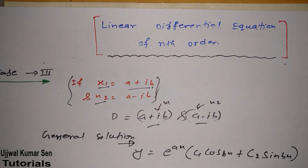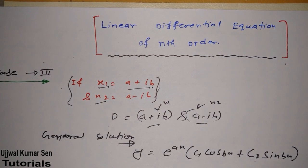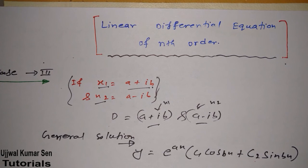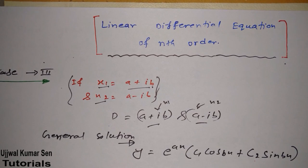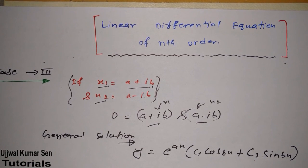So what we covered in this tutorial: linear differential equation of nth order, Case 3. If we consider x1 equal to a plus ib and x2 equal to a minus ib — these are imaginary roots, and these two values are different. So this is a different case from others. Therefore the general solution for this case is y equals e to the power ax times open bracket c1 cos bx plus c2 sin bx close bracket. This is all about nth order linear differential equations in the case of imaginary but unequal roots. There is a case when both values are the same, and I will share that in my next tutorial.